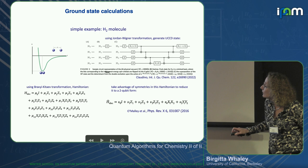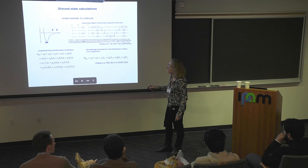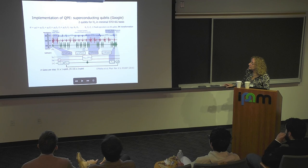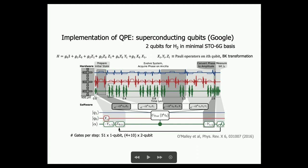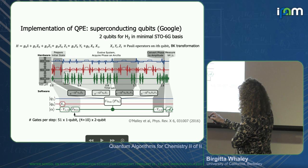I wanted to show these to give some idea of, even for these small systems with only two electrons, how many terms in the Hamiltonian you actually get and what they look like in the qubit representation. This was their implementation of the quantum phase estimation algorithm using the Bravyi-Kitaev transformation. They have two qubits and ancilla qubits.